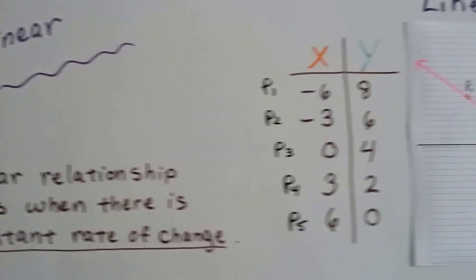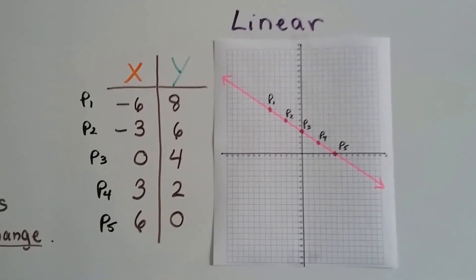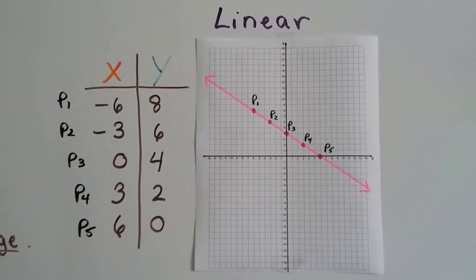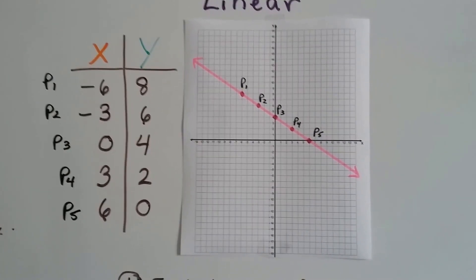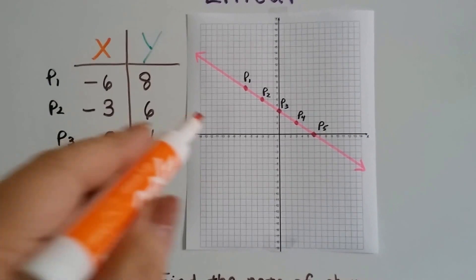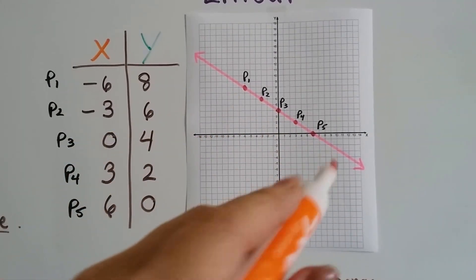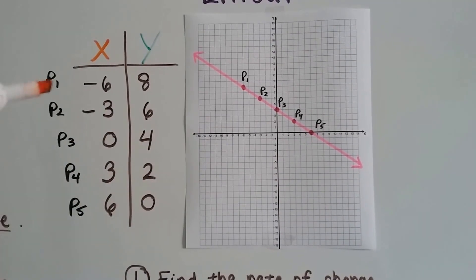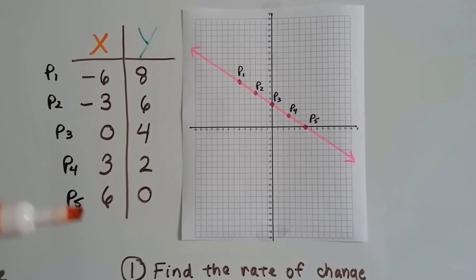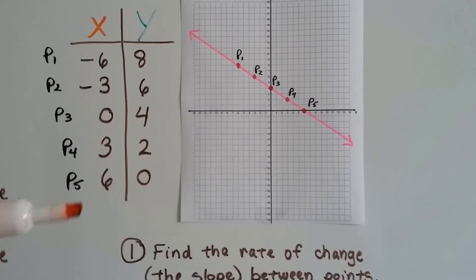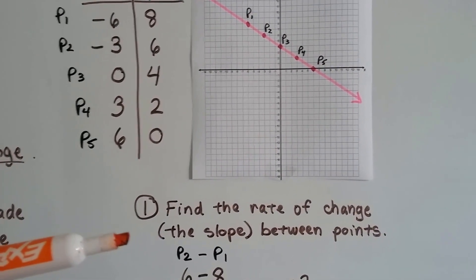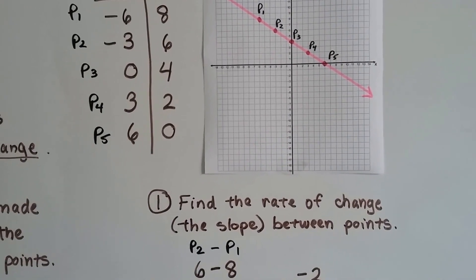So we have a table here, and we have a line. This is linear. If you look at the line, you can see all the points are nice and pretty in a row. We can look at our table — this is 0.1, 0.2, 0.3, 0.4, 0.5. And we can find the rate of change, the slope between the points.